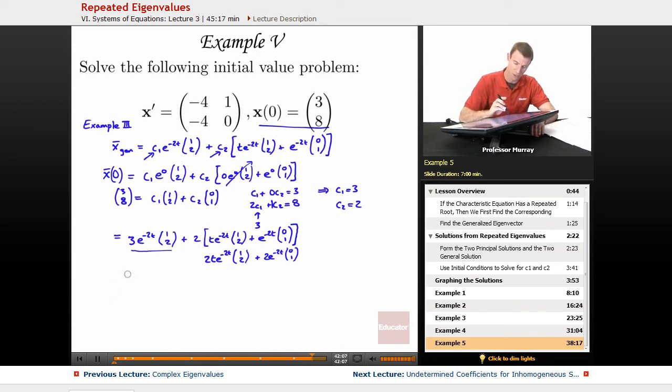Then I can combine my like terms with the e^(-2t)s. I'll get e^(-2t) times 3 times 1 and 2 times 0, so just 3 there. On the bottom I've got 3 times 2 and 2 times 1, that's 6 + 2 = 8, plus t e^(-2t). If I multiply this 2 in with this vector, I get (2, 4) there. That's as simple as it's going to get.